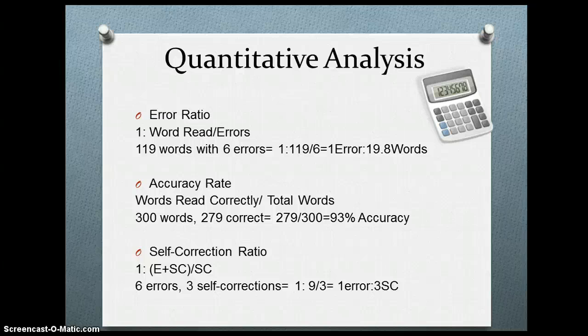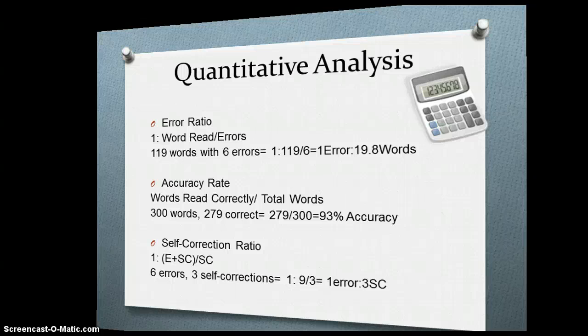Lastly, the self-correction ratio, which is 1 in front of the errors plus the self-corrections divided by the self-corrections. So let's say they make six errors and three are self-corrected — we get one error for every three self-corrections. That is the quantitative analysis that can be done from a running record.